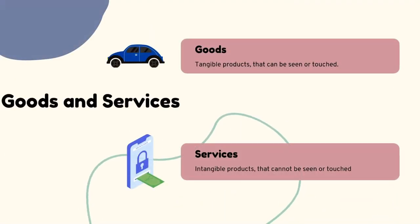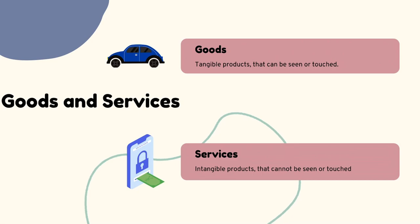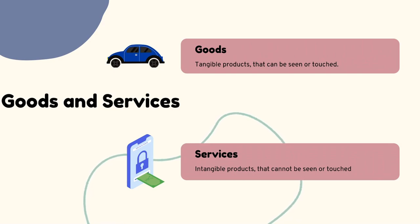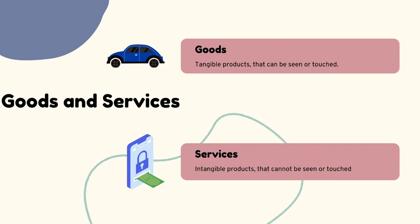Let's look at goods and services. Goods are tangible products that can be seen or touched — for example, a car. Services are intangible products that cannot be seen or touched, like a banking service.